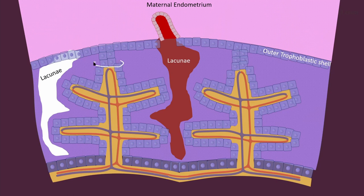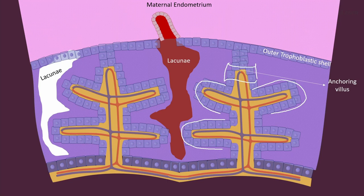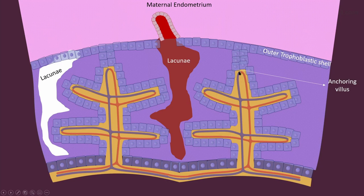The branch of tertiary villi that is connected with the maternal endometrium with the help of these trophoblastic columns — this one and this one — they are called anchoring villi. The other ones that are freely moving and can freely swiggle around within the syncytiotrophoblast are termed free villi or absorbing villi, because their main function is to absorb nutrition from this maternal blood, while the anchoring villus branches anchor the placenta.